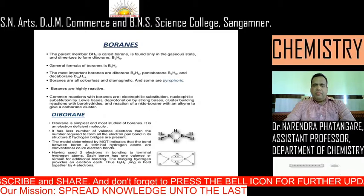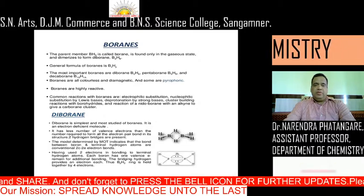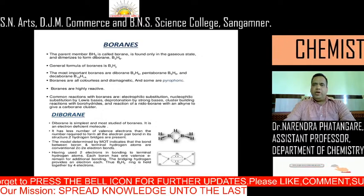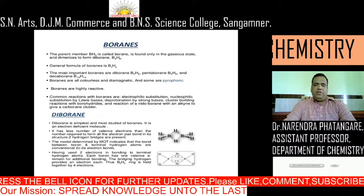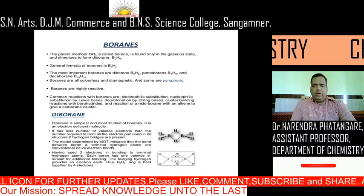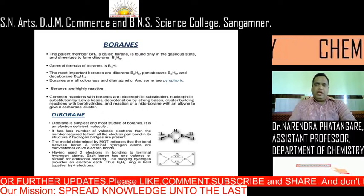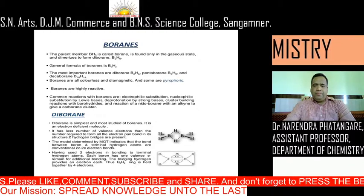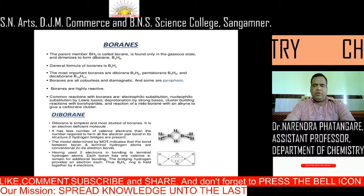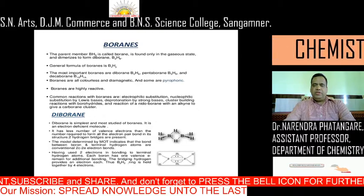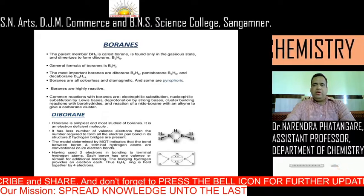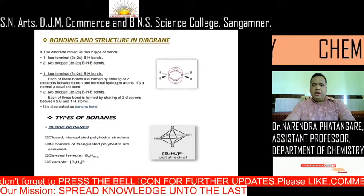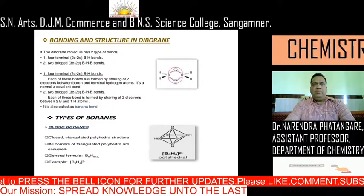The model determined by molecular orbital theory indicates that the bonds between boron and terminal hydrogens are conventional two-center two-electron bonds. Having used two electrons in bonding to the terminal hydrogen atoms, each boron has one valence electron remaining for additional bonding to the bridging hydrogens. The bridging hydrogens provide one electron each, thus the B2H2 ring is held together by four electrons.